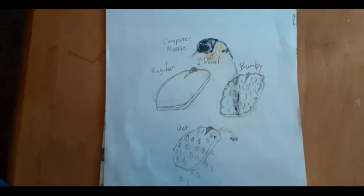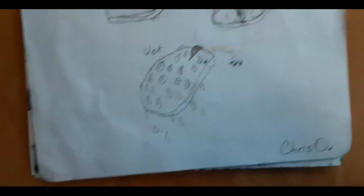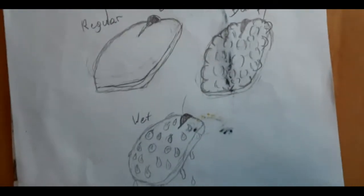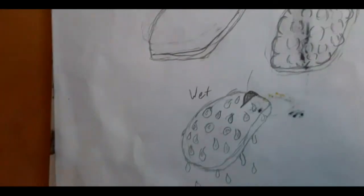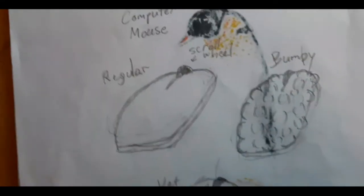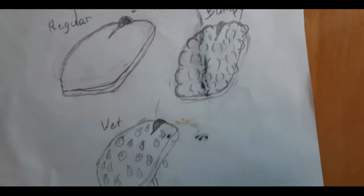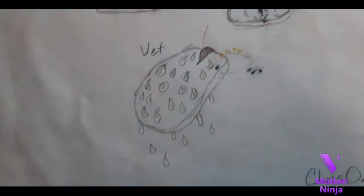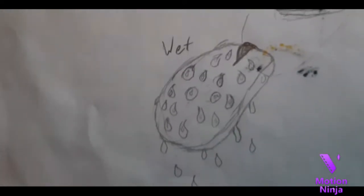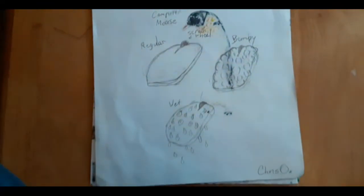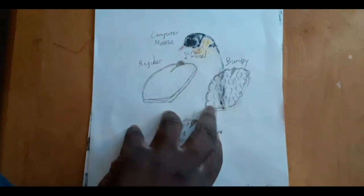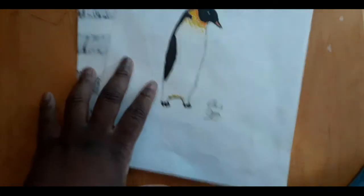Before the next drawing, let me show you something a bit old, a little bit of an old original idea of mine. We had to do something related to texture. We had to draw several different objects with several different textures. I decided to do mouses, computer mouses. I know it's horrible, I get it, but I tried my best. This is supposed to be a wet mouse, a bumpy mouse, and a regular mouse.